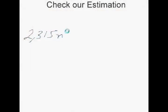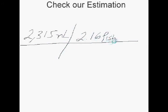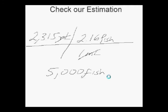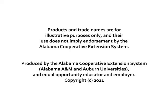To check our estimation, we can multiply the number of milliliters we displaced, 2,315, by the number of fish we need to displace 1 milliliter of water, 2.16. This counting exercise was completed in just a few minutes, making it fast and accurate while minimizing the handling of our fish.